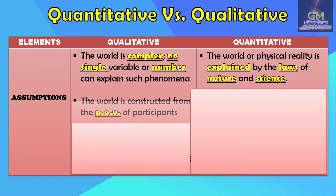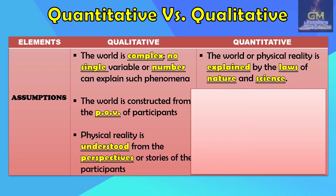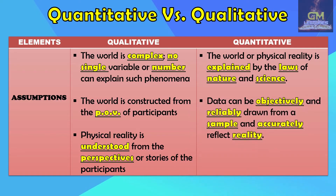Furthermore, in qualitative research, the world is constructed from the point of view of the participants. As such, the physical reality is understood from the perspectives or stories of the participants themselves, whereas in quantitative research, the data can be objectively and reliably drawn from a sample and accurately reflect reality.